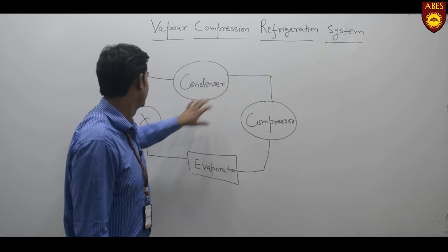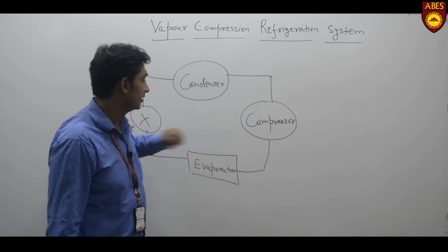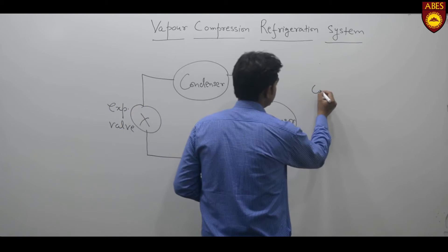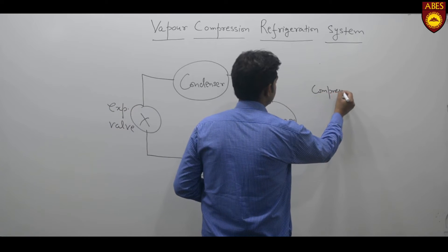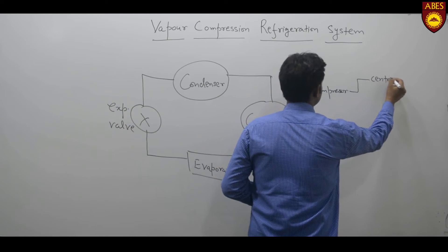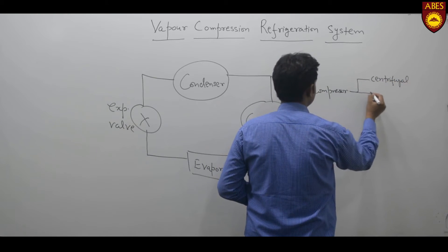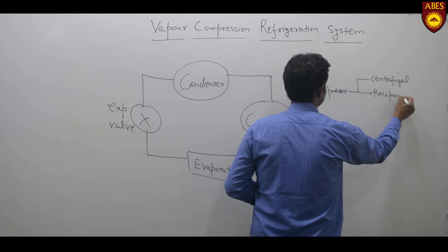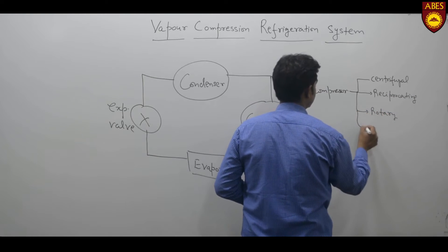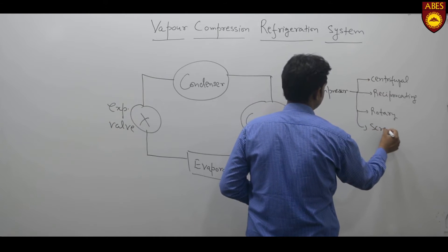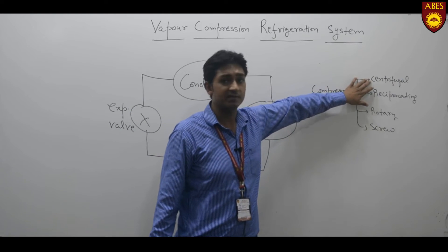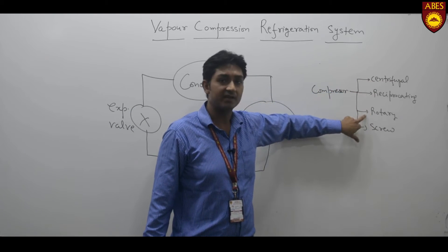The four important components are: compressor, condenser, expansion valve, and evaporator. The compressor is a device where we are providing the work. The compressor can be further classified into many types, such as centrifugal compressor, reciprocating compressor, rotary compressor, and screw compressor.